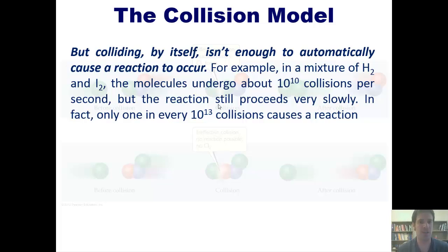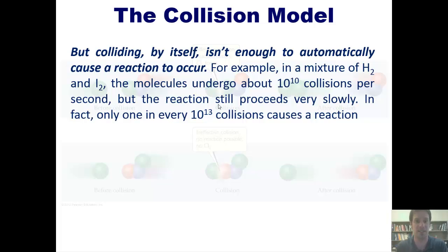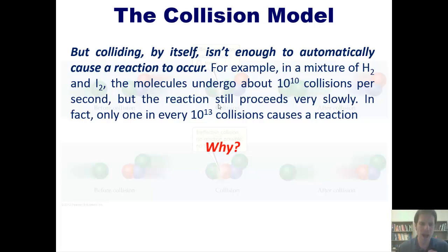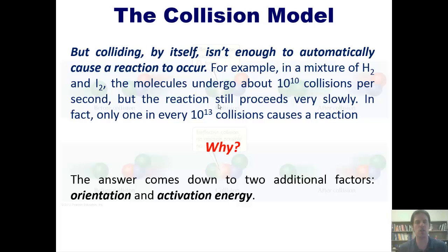But colliding by itself isn't automatically enough to cause a reaction to occur. For example, in a mixture of hydrogen and iodine, molecules undergo about 10 to the 10th collisions per second, but the reaction still proceeds very slowly. Only one out of every 10 to the 13th collisions actually results in a reaction. The reason is because of two additional factors: orientation and activation energy.